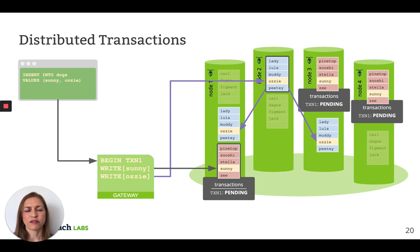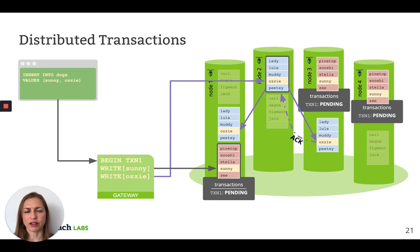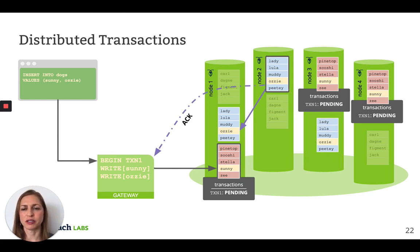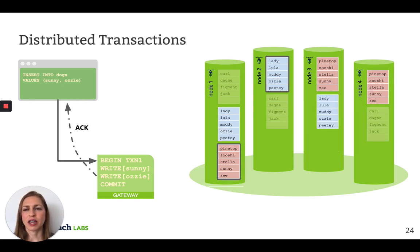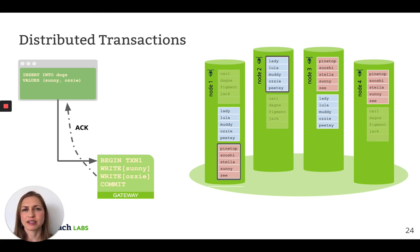Once again, the leaseholder for Aussie will propose a Raft command to write the record to itself and its followers. One of the followers will acknowledge, and since we have a quorum, the write is complete. As a final step, the gateway node commits the transaction by updating the transaction record from pending to committed. I'm not showing it here, but this is also a replicated operation that requires an additional round of consensus. Once the commit is done, we can return to the client and tell the client that the transaction is complete. There's also a background process that releases the transaction markers from the records so that those keys can be read more quickly.